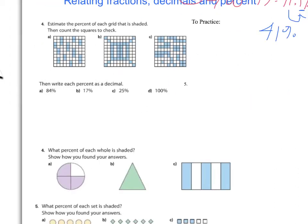All right, now you're going to do some practice. Number four, you're going to estimate the percent for each grid. Actually, go ahead and just count them and write them as a percentage. Here, you're going to write each percentage as a decimal. Here, you're going to take it from a fraction and make it into a percent. So go ahead and press pause and try those at this point.